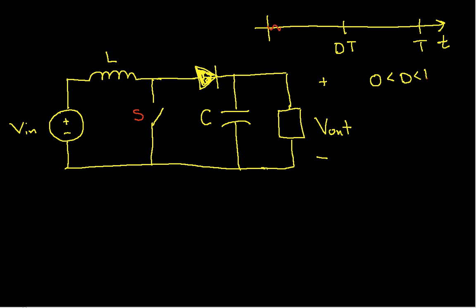So that between 0 and DT, the switch is closed, and between DT and T, the switch is open.